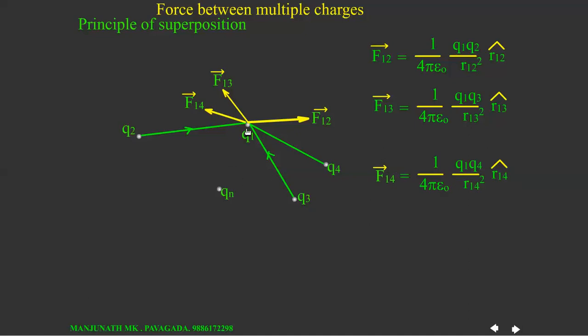Qn also repels this charge in this direction. It is represented by F1n, which is given by 1 over 4 pi epsilon 0, Q1 Qn divided by R1n squared, R1n cap, where this is the unit vector.